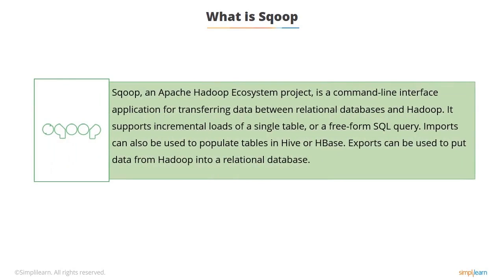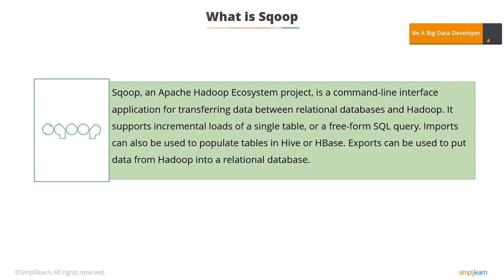Sqoop is an Apache Hadoop ecosystem project. It is a command-line interface application for transferring data between relational databases and Hadoop. It supports incremental loads of a single table or a freeform SQL query. Imports can also be used to populate tables in Hive or HBase. Exports can be used to put data from Hadoop into a relational database.